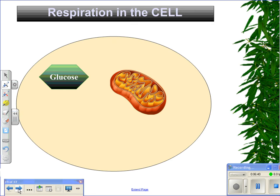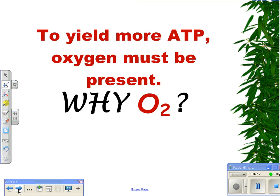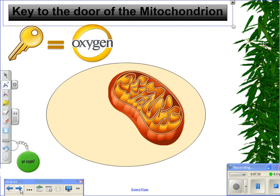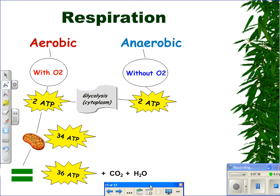Let's take a look at cellular respiration in the cell. We have the glucose molecule out in the cytoplasm, next to a mitochondrion. This organelle is an important organelle used for cellular respiration — this is an ATP-making machine. The first stage is glycolysis; it happens outside the mitochondria. That glucose molecule is going to be broken down and will release two ATP molecules. To yield more ATP, oxygen must be present. Oxygen is the key to the door of the mitochondrion — if we have oxygen present and get into that mitochondrion, we can yield 34 more ATP, giving us a total of 36 ATP.